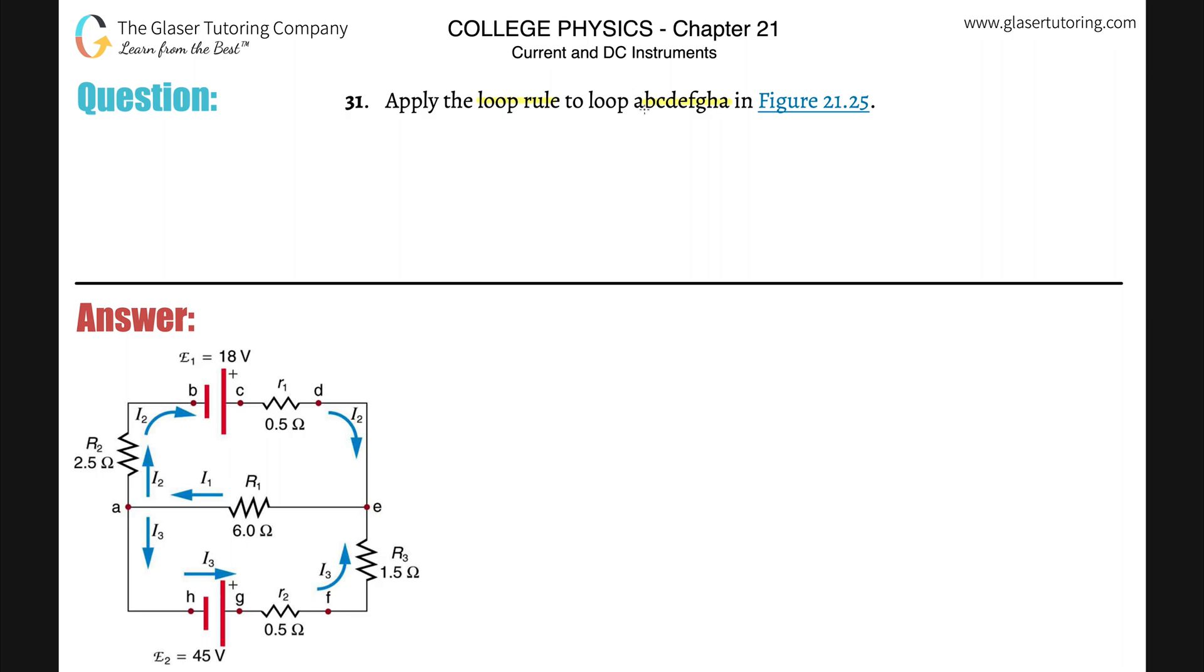So whenever they tell you how to identify the loop, you kind of have to take that order into account. In other words, they're saying A, B, C, D, et cetera. So when we look at the loop down here, we want to go from A to then B, to then C, to then D, to E, to F, et cetera. So basically we're going to start at A and we're going to work our way clockwise around the circuit beginning at A.